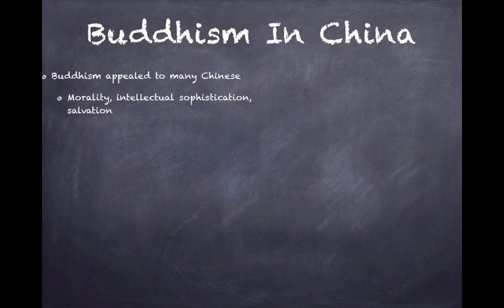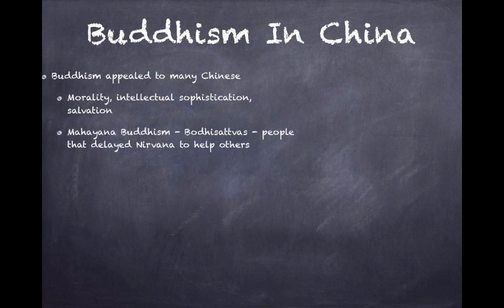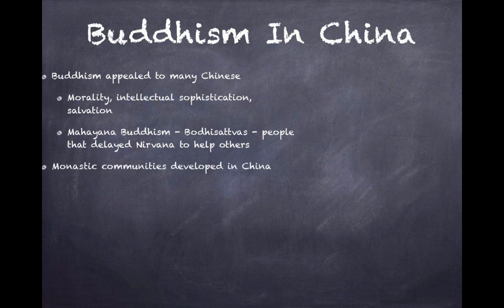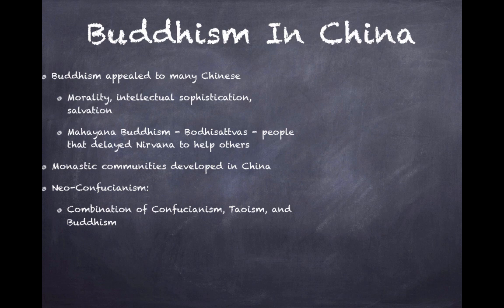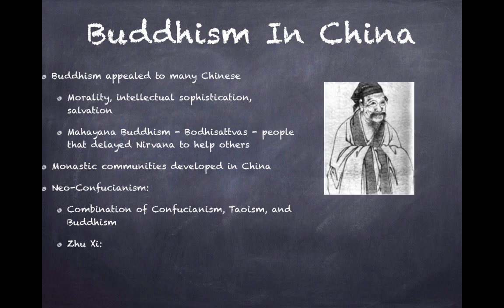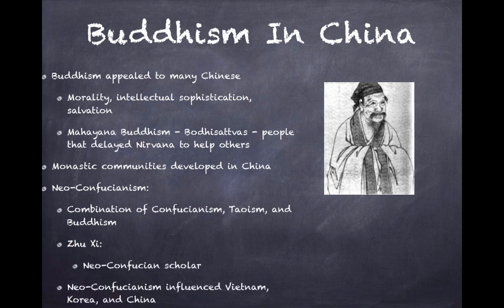Buddhism in China appealed to many Chinese people — the ideas of morality, intellectual sophistication, and salvation were a major appeal. Mahayana Buddhism featured bodhisattvas, who were people that delayed nirvana to help others; they were very close to achieving nirvana but delayed this to stay on earth and help people. Monastic communities also developed in China — people living in communities devoted to a religious life. Neo-Confucianism developed as a combination of Confucianism, Taoism, and Buddhism. Zhu Xi was a notable Neo-Confucian scholar, and Neo-Confucianism also influenced Vietnam, Korea, and China.